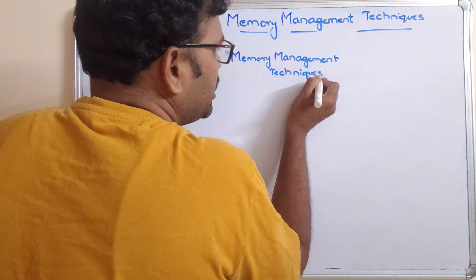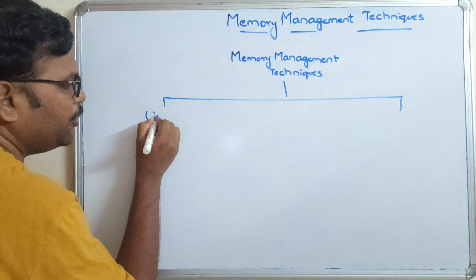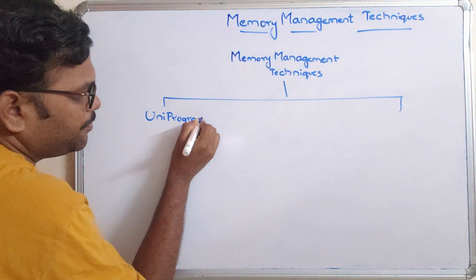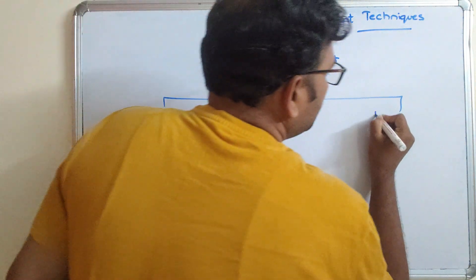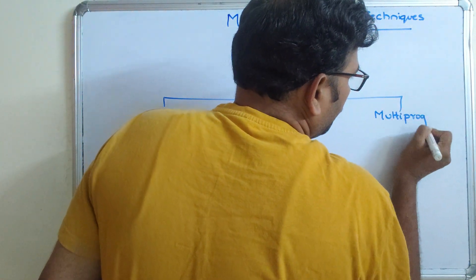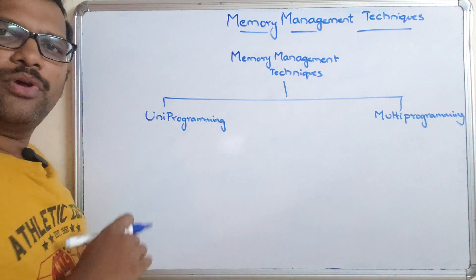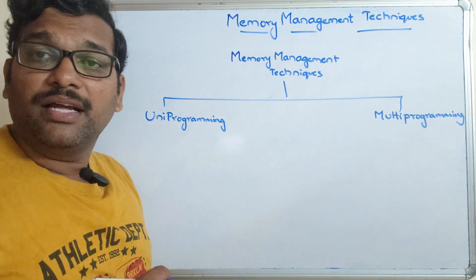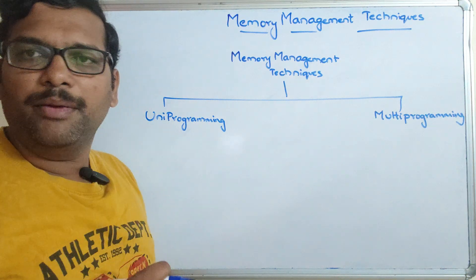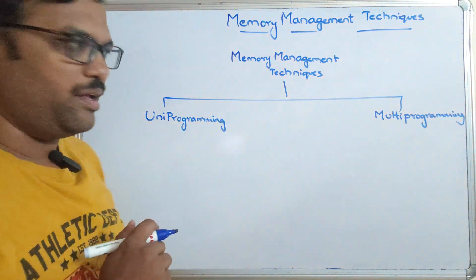These memory management techniques are divided into two categories: uni-programming and multi-programming. In uni-programming, the name itself indicates that at a time only one process can be loaded into the main memory for its execution — only one process is allowed.